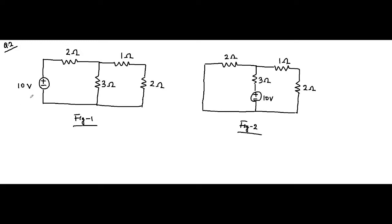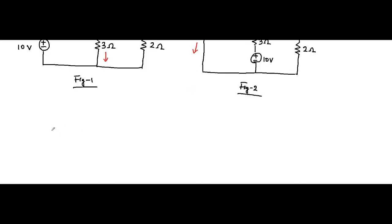In order to prove the validity of reciprocity theorem, we have to find out the current in this middle branch — the second branch — in the first figure. Pay attention: this current in the first figure. And for the second figure, we have to find out the current there. If these two currents are equal then reciprocity theorem is valid. So let us redraw the circuit.